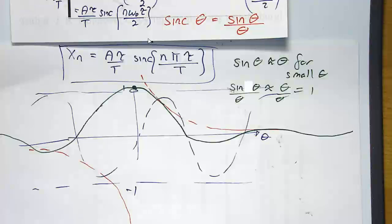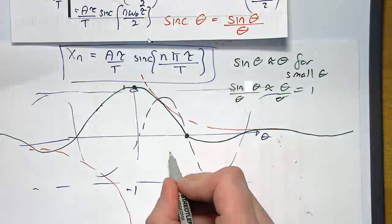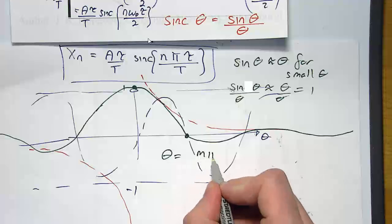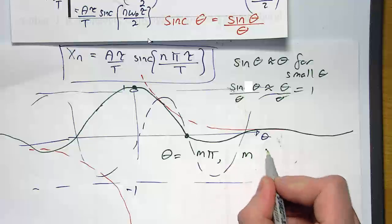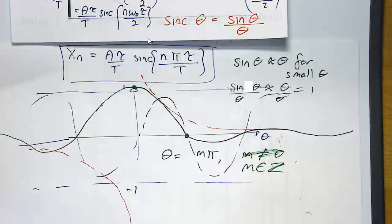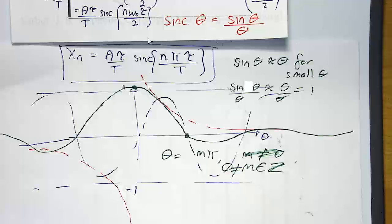The next important thing is when does it cross the zero axis? Well, it crosses the zero axis when the sine part crosses the zero axis. So therefore it crosses the axis when theta is a multiple of pi — we'll call it m times pi, where m is an integer but not equal to 0. So that gives you the point: you cross at pi, 2 pi, 3 pi, 4 pi, and so on. We're going to use that to draw our complex coefficients.